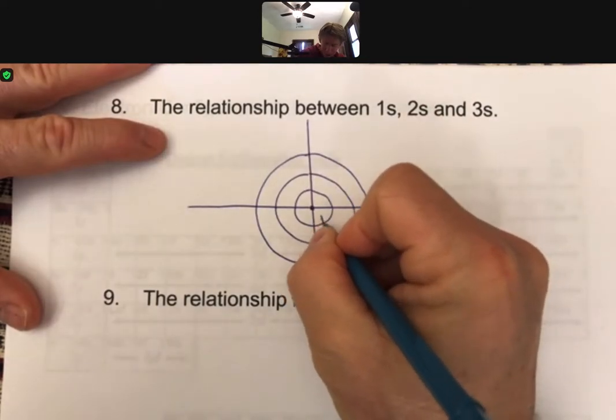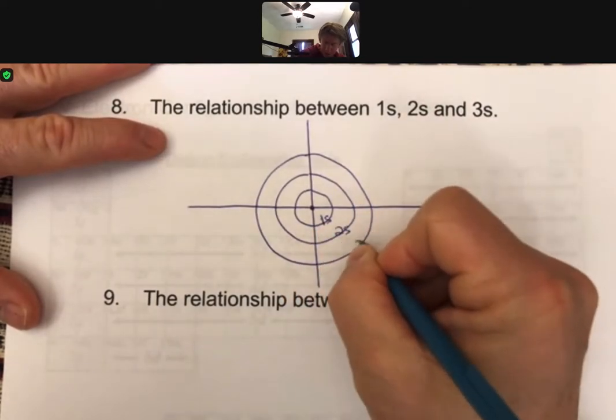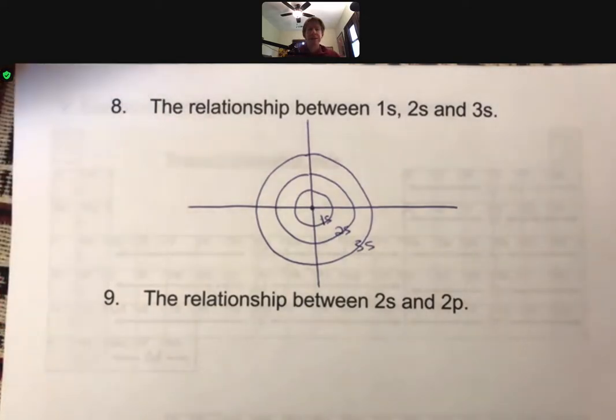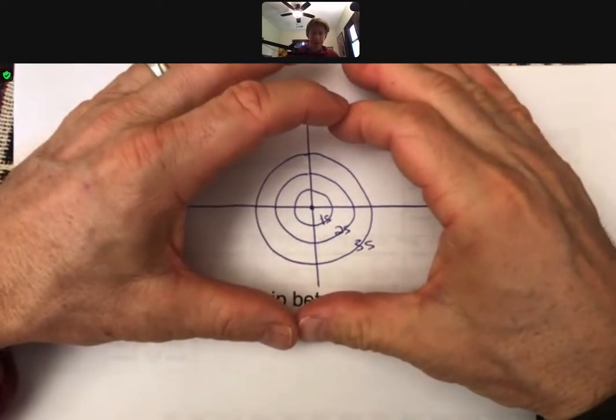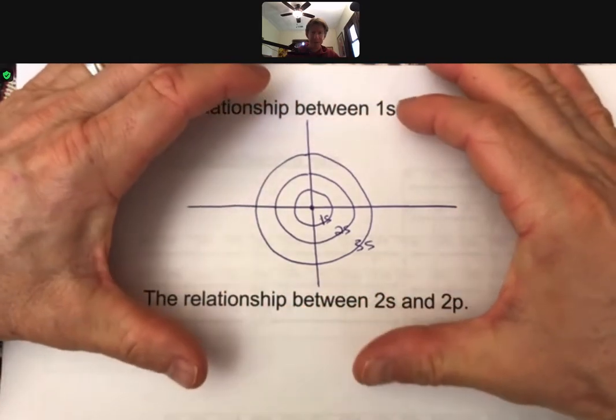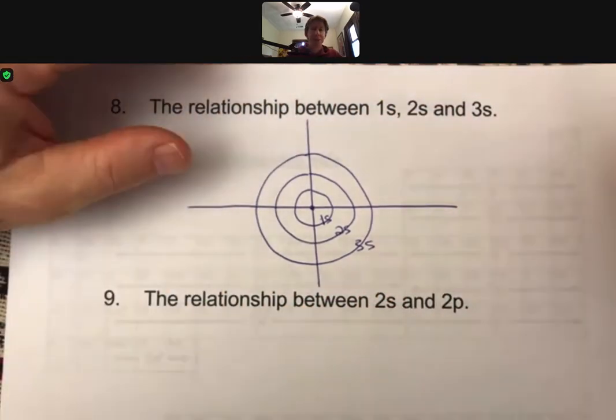with 1s, 2s, and 3s. So four would be bigger, five, six, seven, eight, and so on.